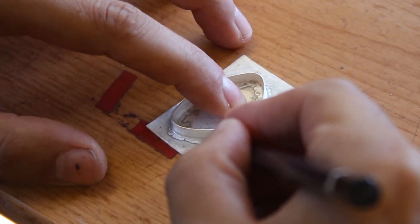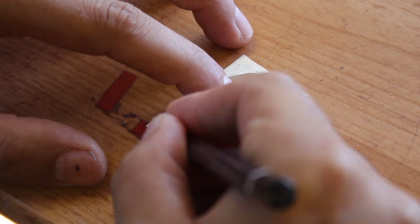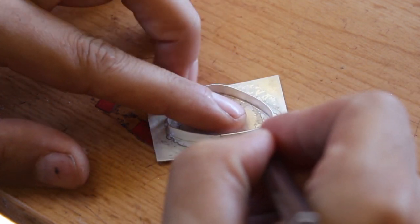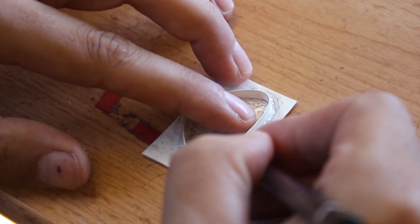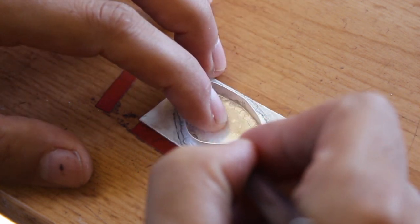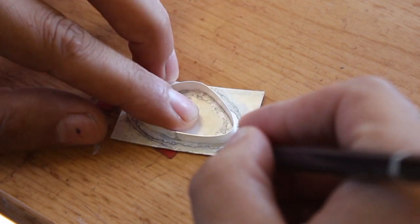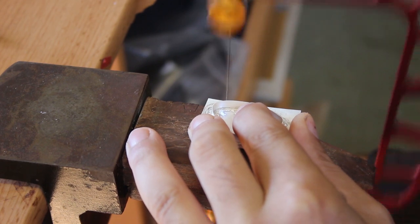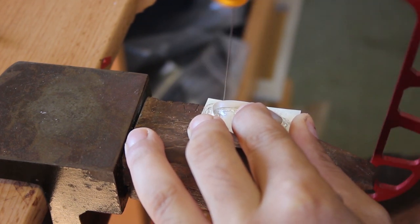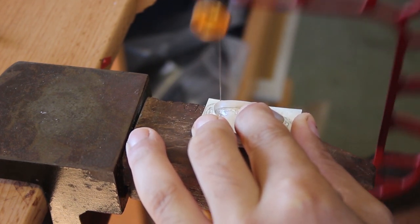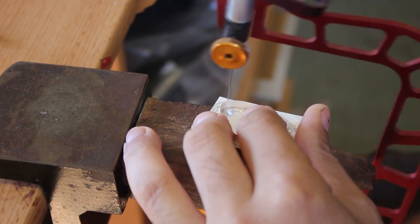It was time to finally start shaping the pendant. So I just took a pencil and drew roughly a rough outline around the bezel cup just to get an idea of what kind of shape the pendant would be in the end. And then after that, I just took my jeweler's saw and cut it out.